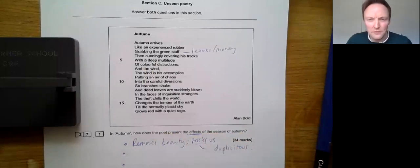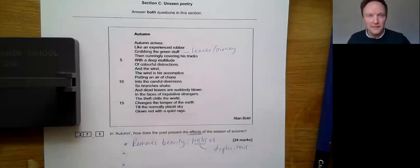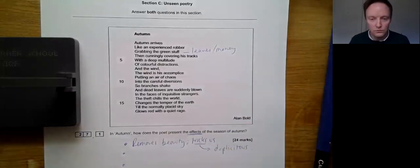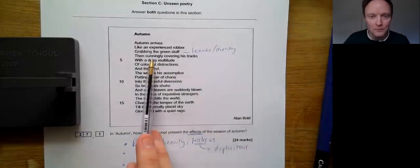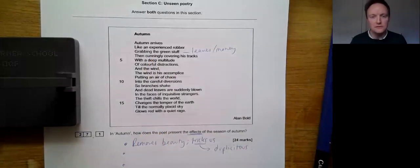So what's the effect of the season of autumn? It removes beauty by being cunning, by being duplicitous. Now, hopefully, I haven't said anything so far that you've gone, I would never would have thought of that for myself. Instead, what you should be thinking is, yes, that's exactly what I thought. The challenge is, everyone says the same thing. So how do you say a bit better? So rather than tricks, we refer to the duplicitous nature of autumn. We don't want to say cunning, because cunning's in the poem, we have to use our vocabularies.